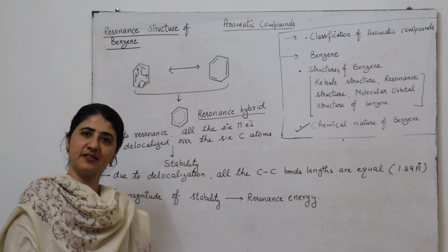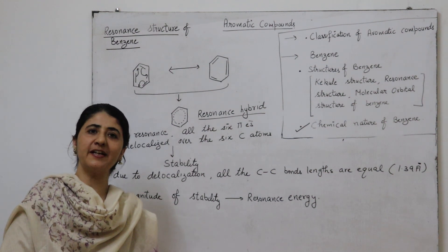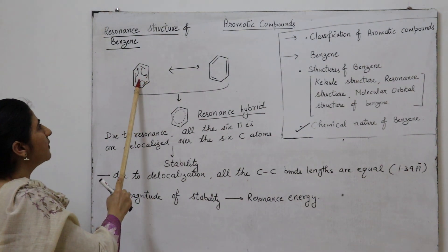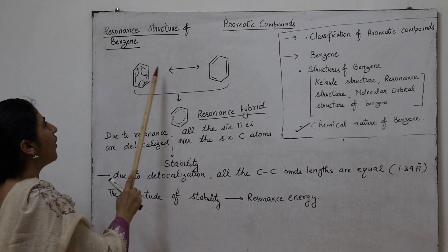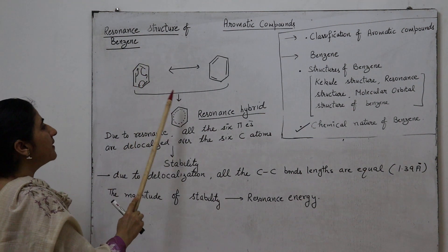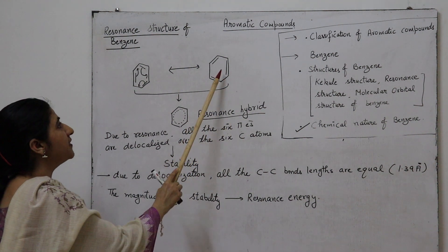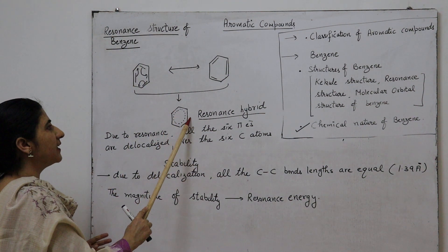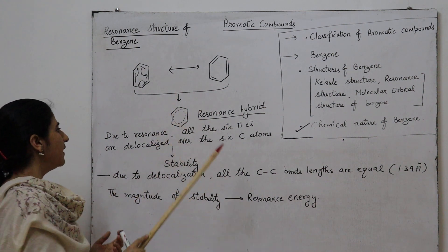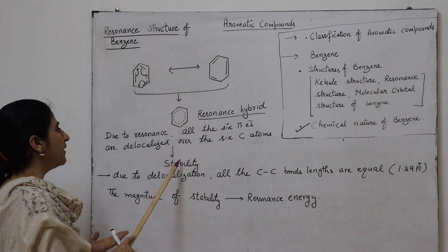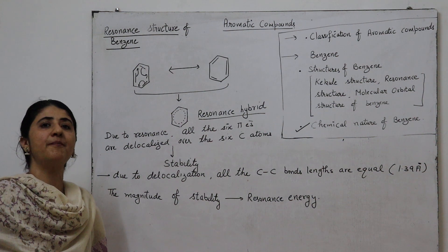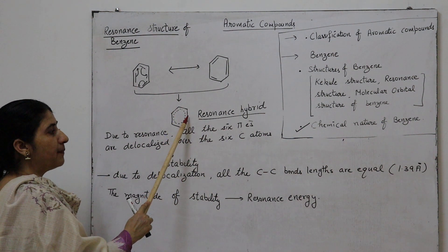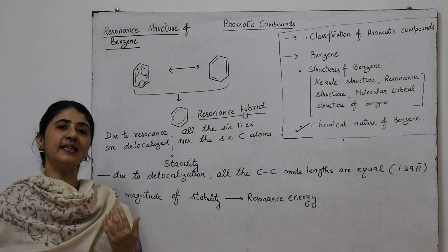To overcome the objections of the Kekulé structure, resonance theory was proposed. According to resonance, there is delocalization of pi electrons. Due to delocalization of pi electrons from their original position, we get two structures of benzene, and benzene is considered a resonance hybrid of these two structures. Due to resonance, all 6 pi electrons are delocalized over the 6 carbon atoms. Due to this delocalization of pi electrons, it makes the benzene molecule more stable — it increases the stability of benzene. Second point: due to delocalization of pi electrons, all carbon-carbon bond lengths are equal, lying between single and double bond.